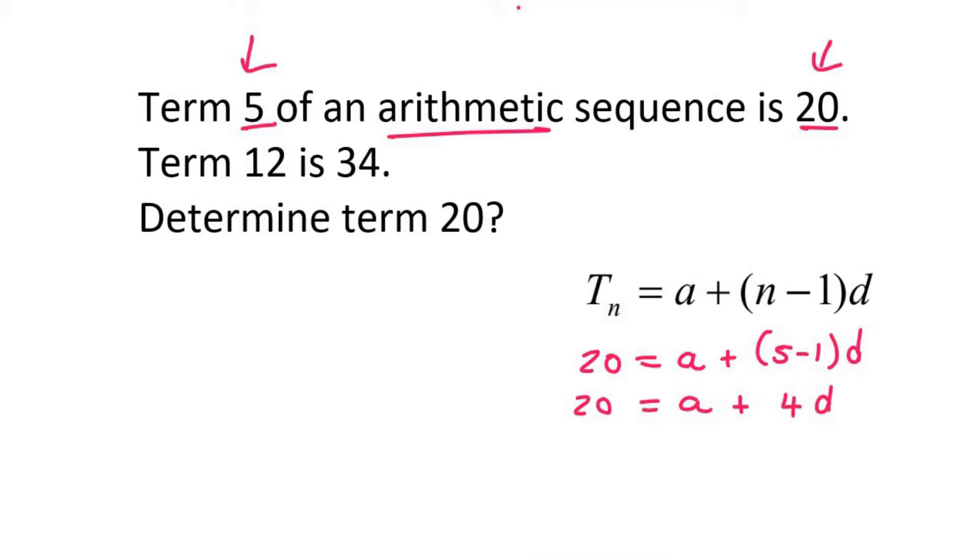But they've given us another piece of information. So I can do the same thing. I can say 34 equals a plus 12 minus 1 times d, and so that becomes 34 equals a plus 11d. Aha!